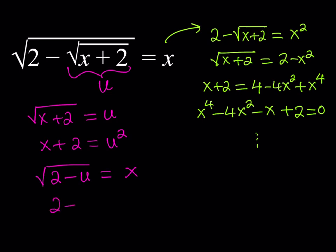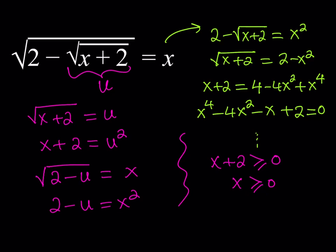We get another equation from here: 2 minus u equals x squared, by squaring both sides. Now let's talk about the domain. Obviously x plus 2 needs to be greater than or equal to 0, otherwise it's not a real number. Also, x needs to be greater than or equal to 0, since it equals the square root of something. And 2 minus the square root of x plus 2 — the expression inside the outer radical — also needs to be greater than or equal to 0. So we have a system of inequalities and we need their intersection.